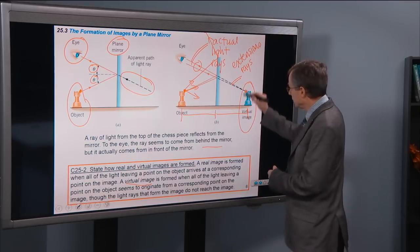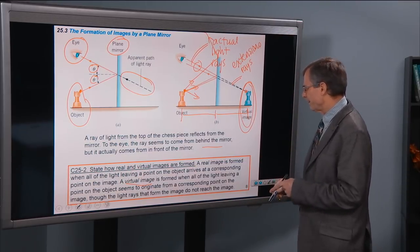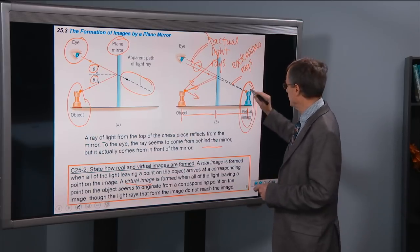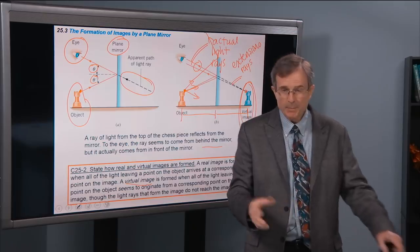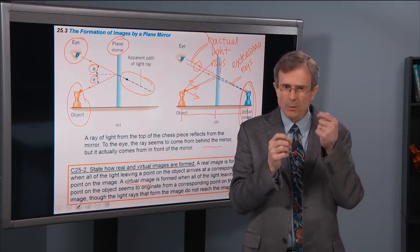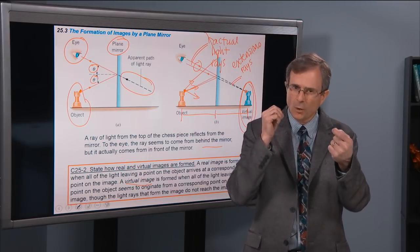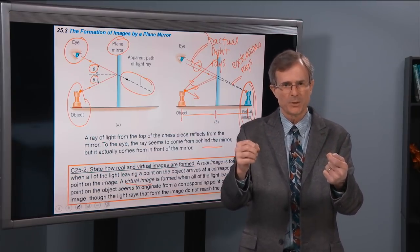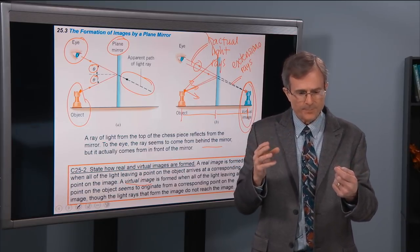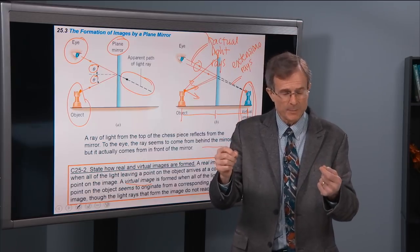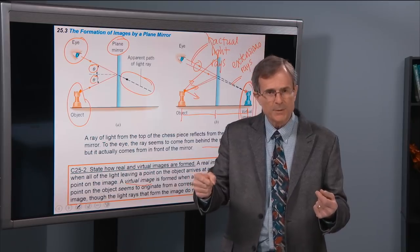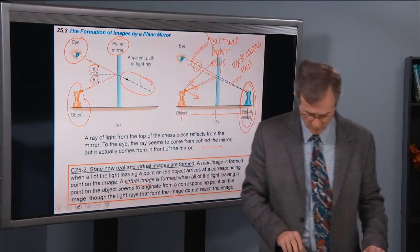So a virtual image is formed when all of the light leaving a point on the object seems to originate from a corresponding point on the image, though the light rays that form the image do not reach the image. These light rays form the image, but they're just extensions of the actual light rays. This is a virtual image. If each point on the object has light that arrives at the same point on the image, it's a real image; if it appears to originate from that point, it is a virtual image.